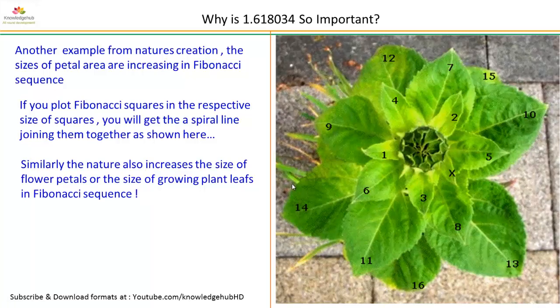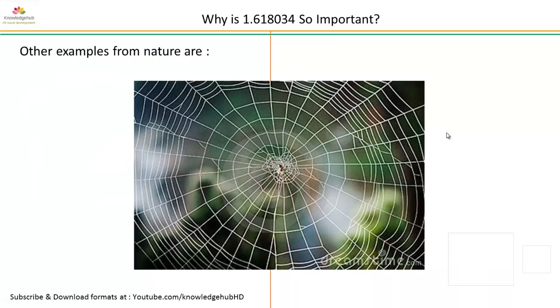Similarly, nature also increases the size of flower petals or sizes of the growing plant leaves in Fibonacci sequence. The leaf size is one, you can see the two, then it is three, then four, five, six, seven, eight, and so on. Another example from nature are spider webs. They perfectly follow the Fibonacci sequence.